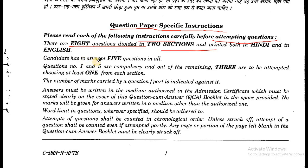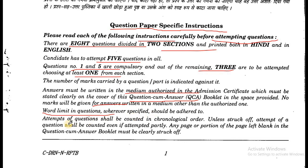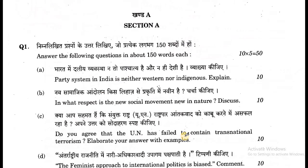Candidates have to attempt five questions. Question one and five are compulsory, and out of the remaining, three are to be attempted by choosing at least one from each section. The number of marks carried by a question or part is indicated against it. Answers must be written in the medium authorized in the admission certificate, which must be stated clearly on the cover of the answer booklet. No marks will be given for answers written in a medium other than the authorized one. Word limit in the questions, wherever specified, should be adhered to. Attempts of the question shall be counted in chronological order unless struck off. Any page or portion of the page left blank in the answer booklet must be clearly struck off.